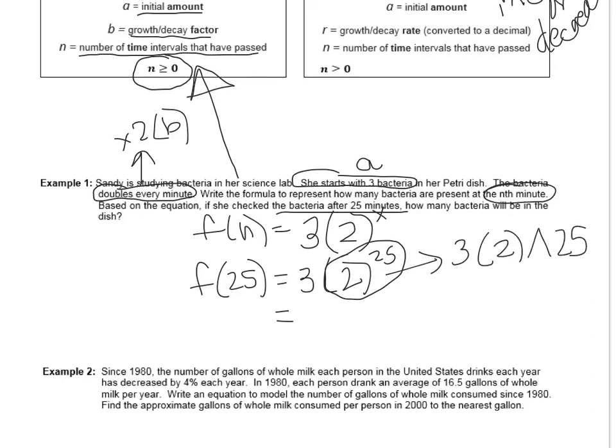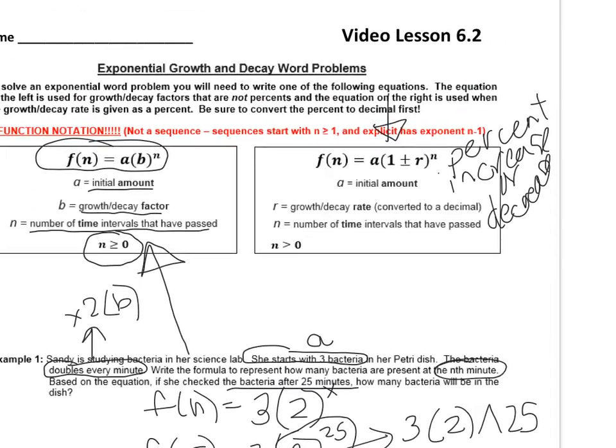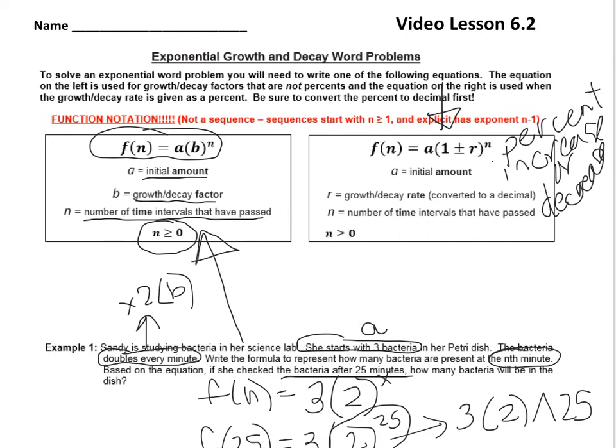And when you do that, you see that there's actually 100,663,296 bacteria. So you can see how fast bacteria grows in 25 minutes. We are overwhelmed with bacteria. Now let's take a look at an example where we are going to use this second type of equation.